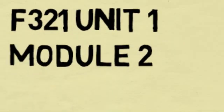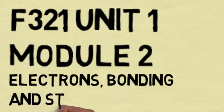F321, Unit 1, Module 2. Electrons, Bonding and Structure.